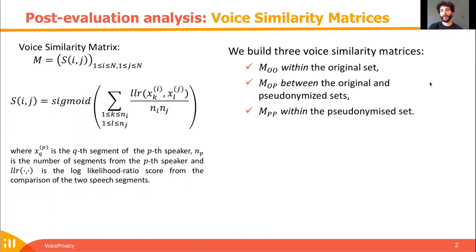We build three voice similarity matrices: MOO within the original set of speech segments, MOP between the original and pseudonymized sets, and MPP within pseudonymized sets. Here I will use P for pseudonymized and A for anonymized, and I will use them in the same manner even if they are two different notions.